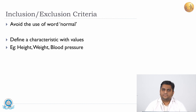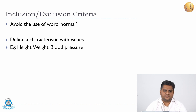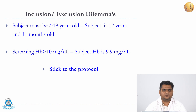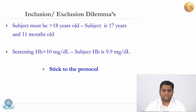Avoid the use of the word 'normal' when mentioning inclusion or exclusion criteria — define characteristics properly with specific values. For example, if your inclusion criterion states 'subject must be greater than 18 years old' and you come across a subject of 17 years and 11 months, do not include them. Another example: if screening for hemoglobin and including patients with hemoglobin 10 or above, and you encounter a patient with hemoglobin 9.9, exclude them from the study. We must stick to the protocol as mentioned.